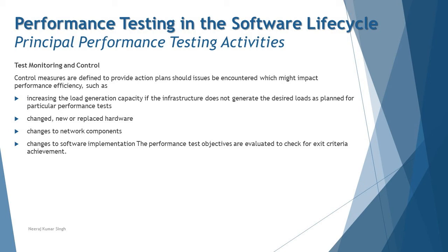Examples of control actions include: increasing load generation capacity if the infrastructure cannot generate the desired load, using additional load generators, replacing or upgrading hardware, making changes to network components, and changes to software implementation. The software test objectives are also evaluated to check for exit criteria achievement, ensuring performance test objectives are met on an ongoing basis.